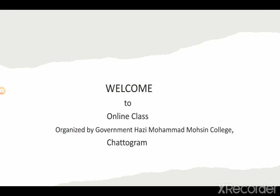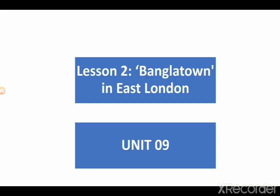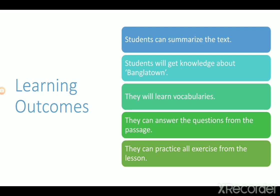This online class is conducted by Government Haji Muhammad Mohsin College. Today I'll discuss Lesson 2 of Unit 9, titled 'Banglatown in East London.' After completing the lesson, the learning outcomes are: you can summarize the text, you will get knowledge about Banglatown, you will learn vocabularies, and you can answer questions from the passage.